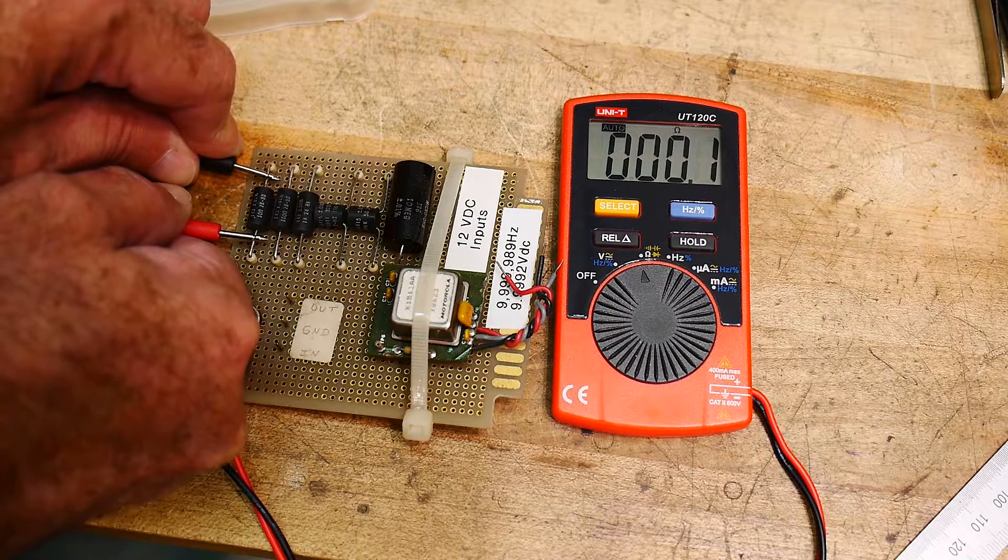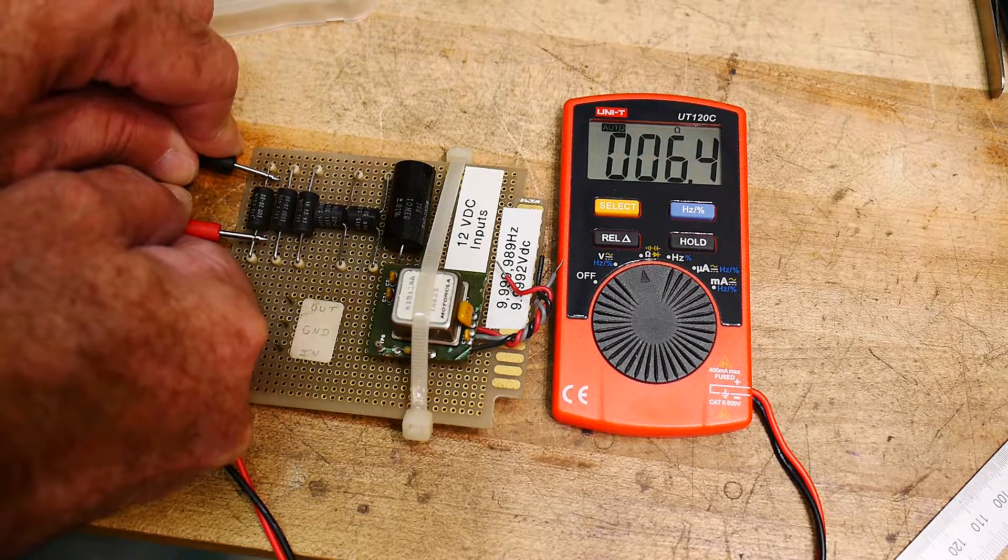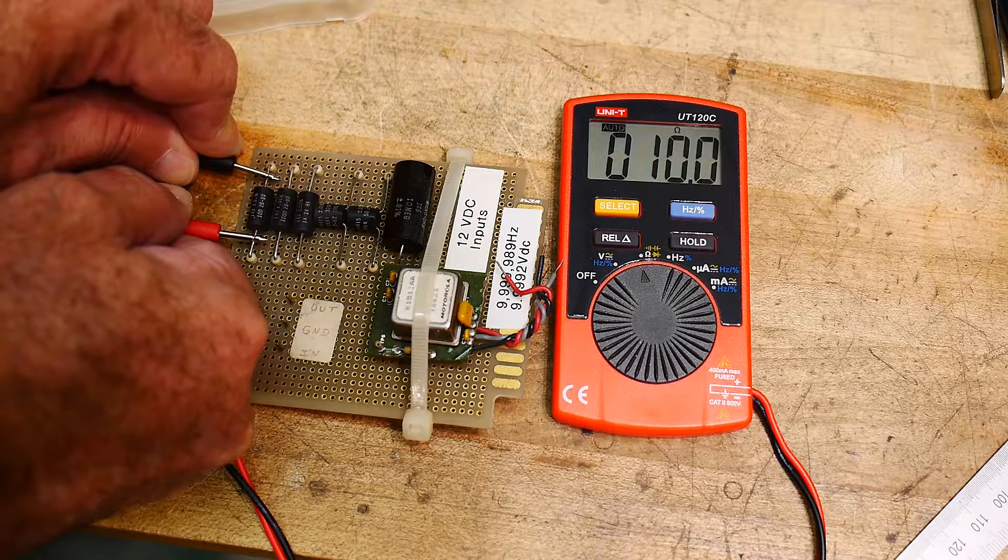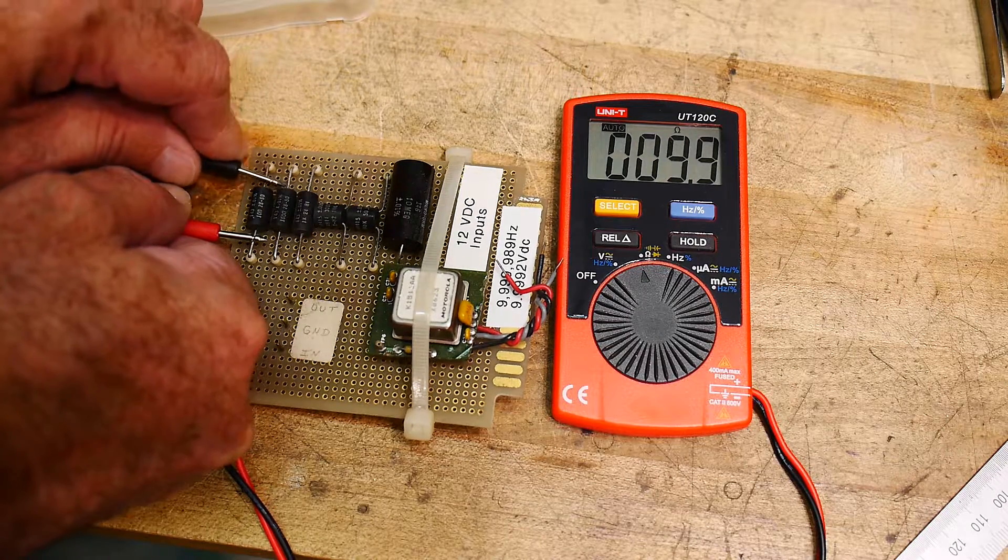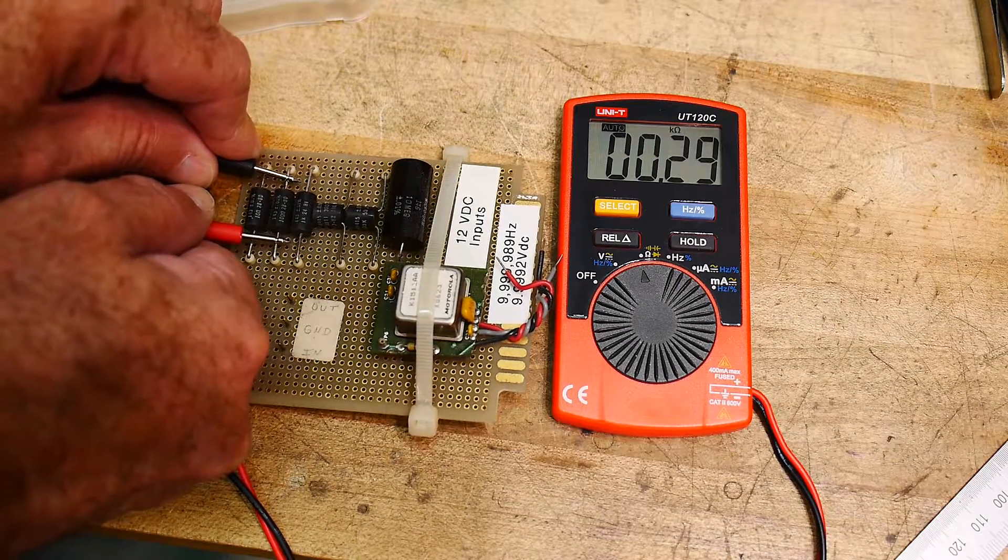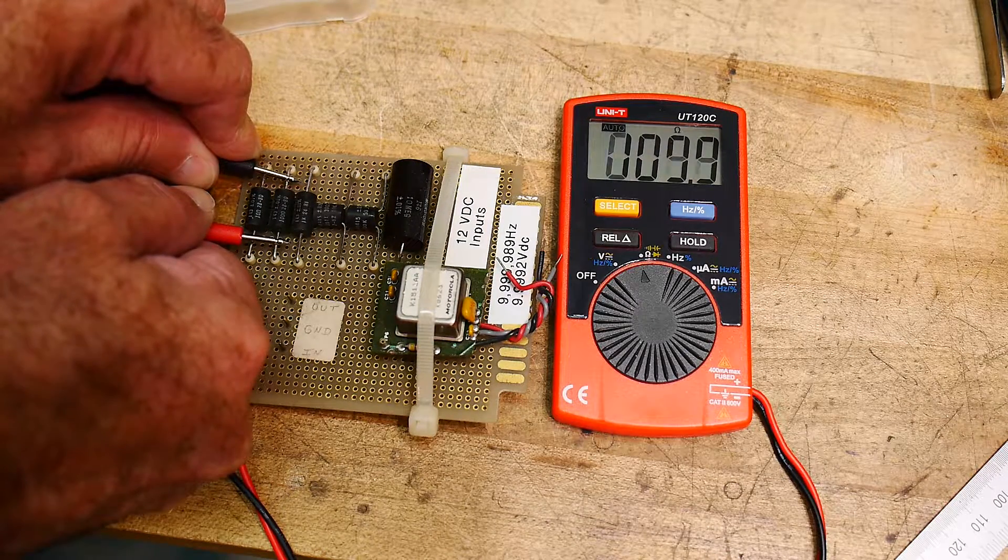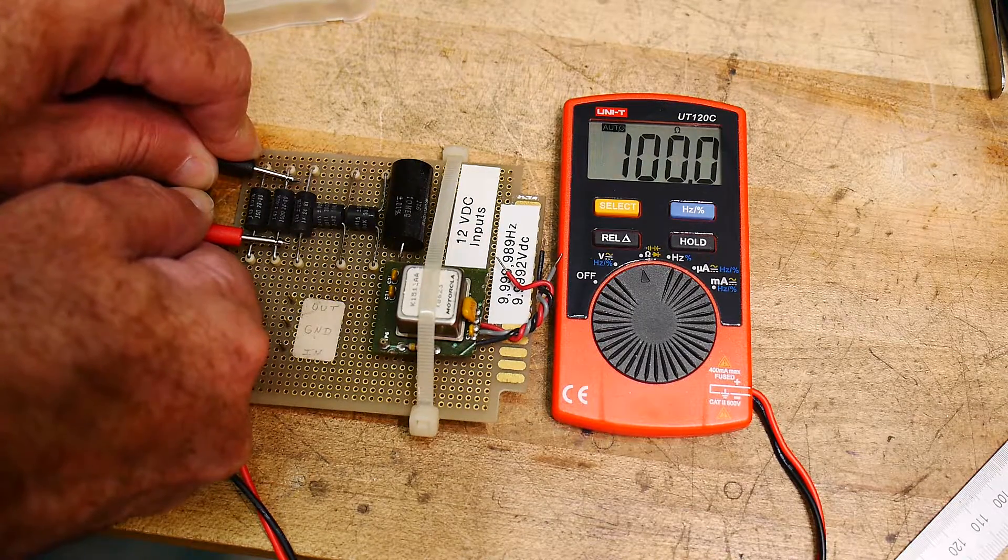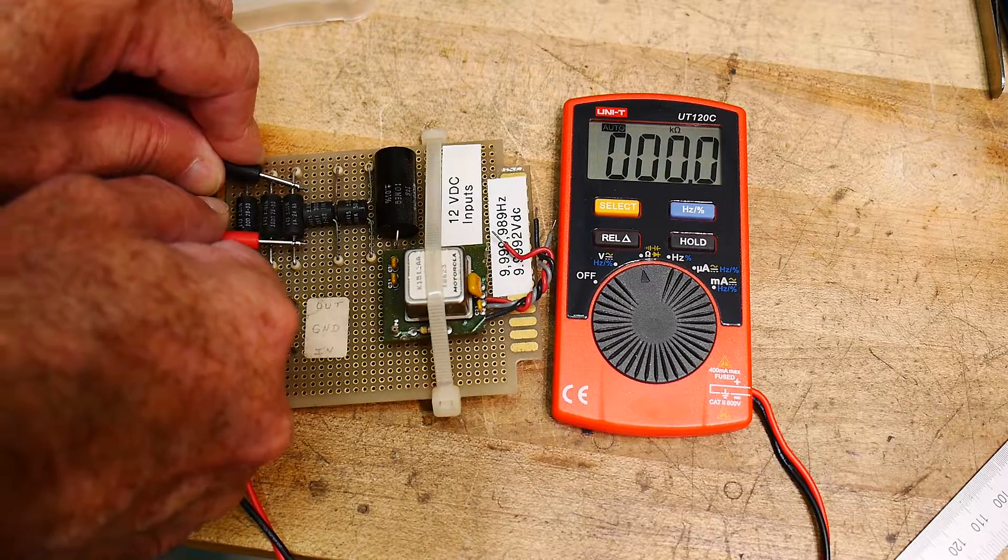So this is 10 ohms. 10.0. This is 100 ohms. You can see it's a bit slow in calculating resistance, but there you go, 100.0. This is 1K.